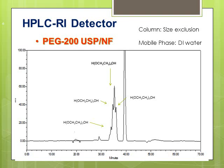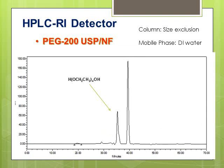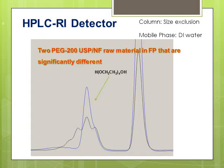The next slide shows another PEG 200 USP sample, which has a completely different profile — it consists of only a single peak. So although all these raw materials from different suppliers may all be USP grade, they definitely have differences depending on who manufactures them. You may end up with PEG having a different ratio of monomers.